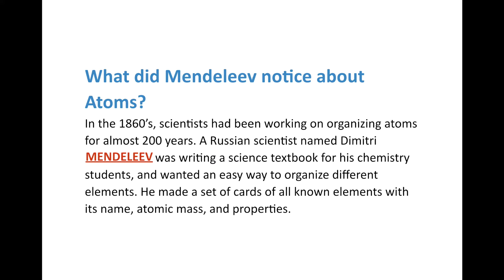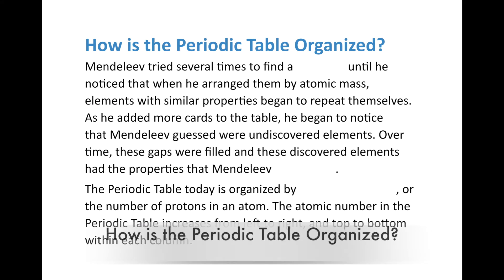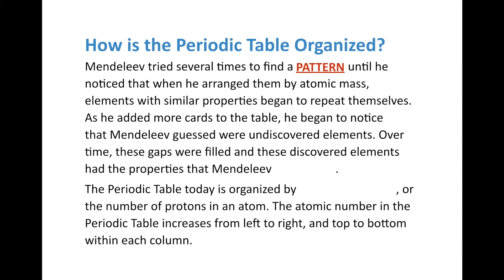He created a set of cards with all the known elements with their names, their atomic masses, and their properties. He tried several times to find a pattern with these atoms that he could arrange the elements in, until he noticed that when he arranged them by atomic mass, elements with similar properties started to appear and repeat themselves.